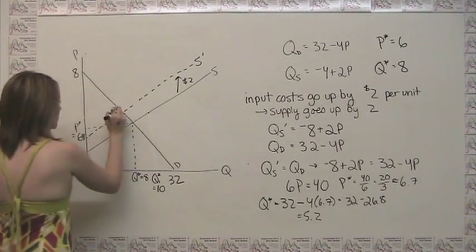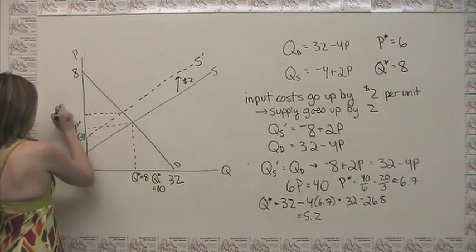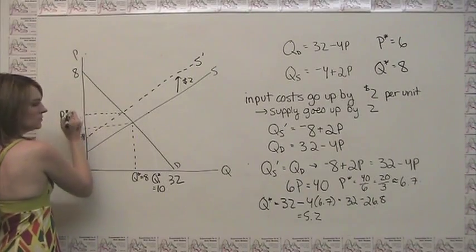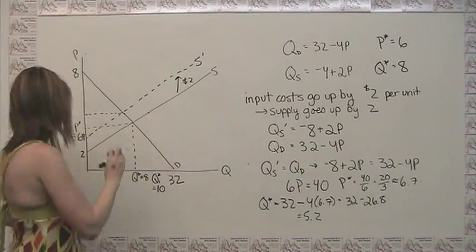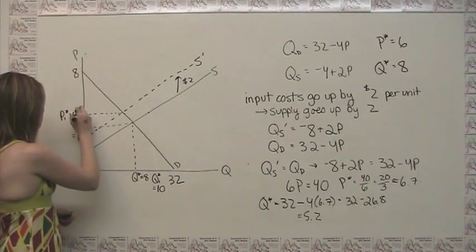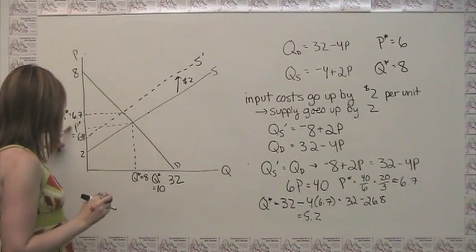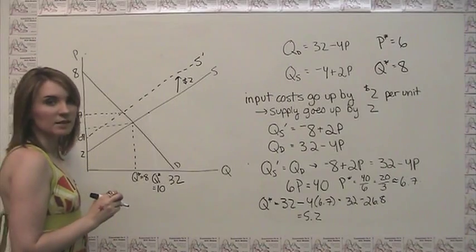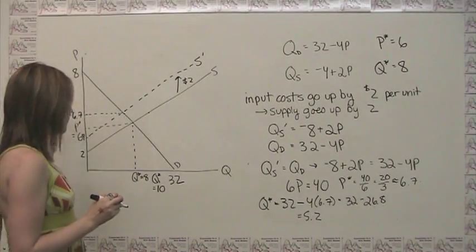We can say our new equilibrium price, our p1 star, is equal to 6.7, which makes sense because our old p star was 6, and we were expecting a price increase.